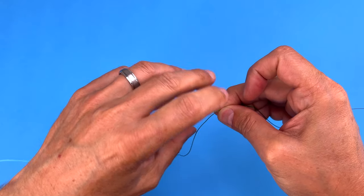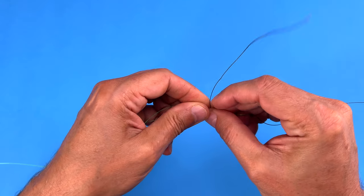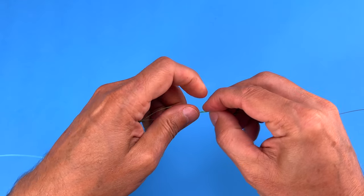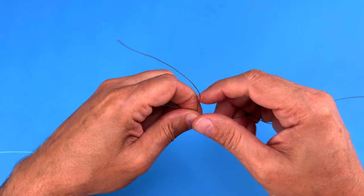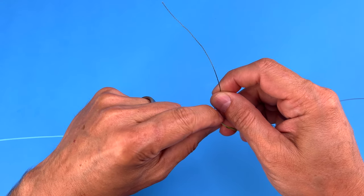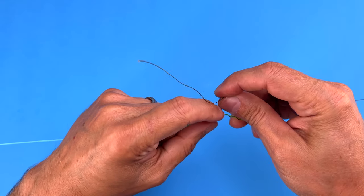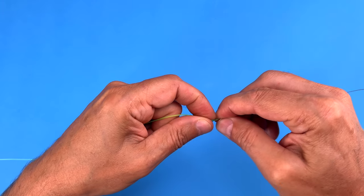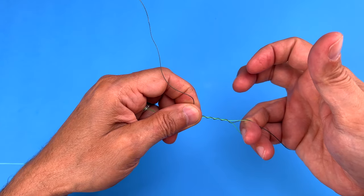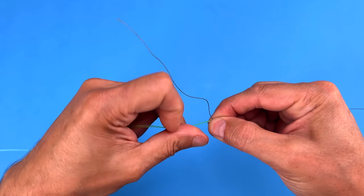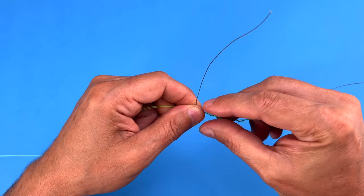And then you're going to take the tag end of the braid and wrap it around the tag end of the lead and the lead itself seven times towards the lead. As you can see here, again, do it seven times.